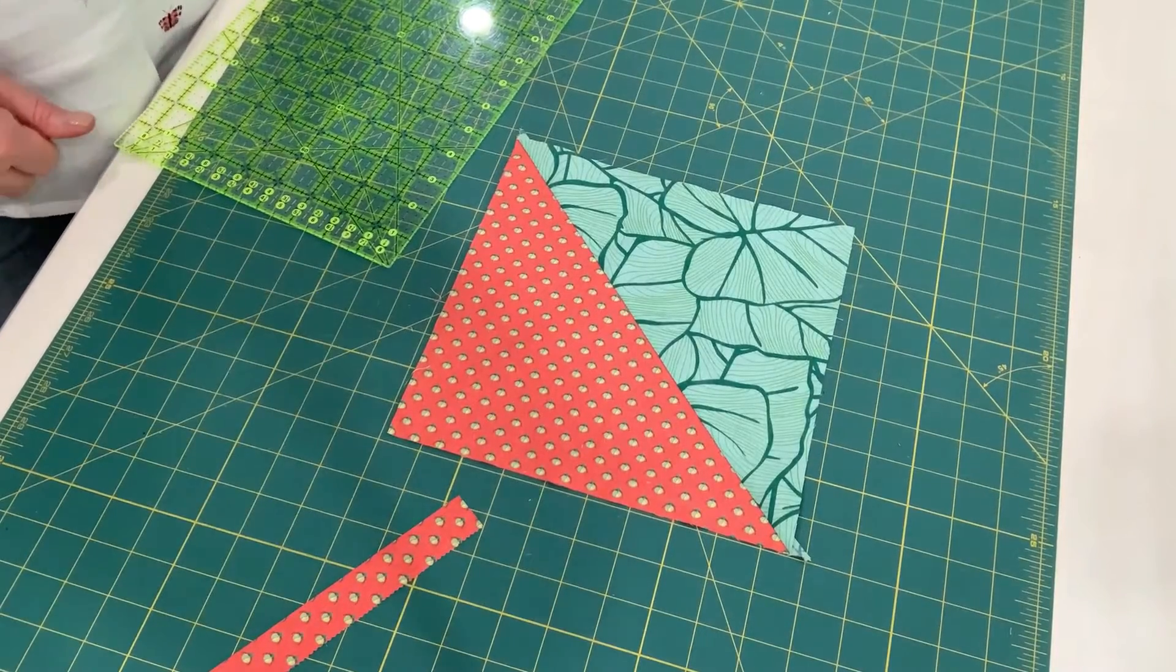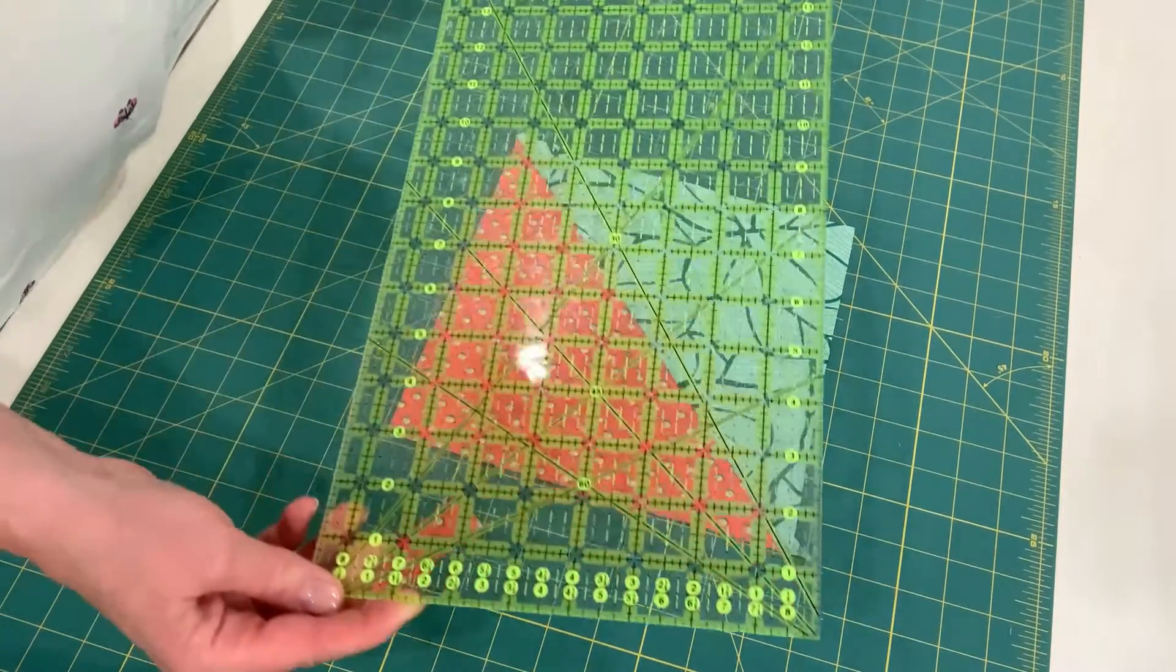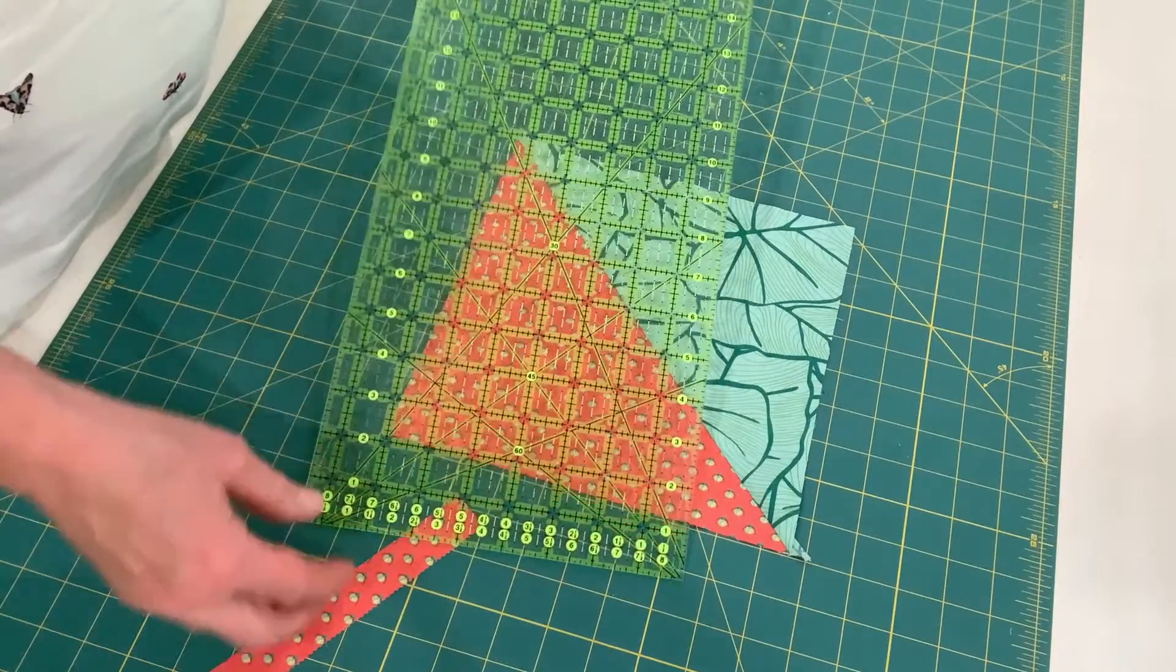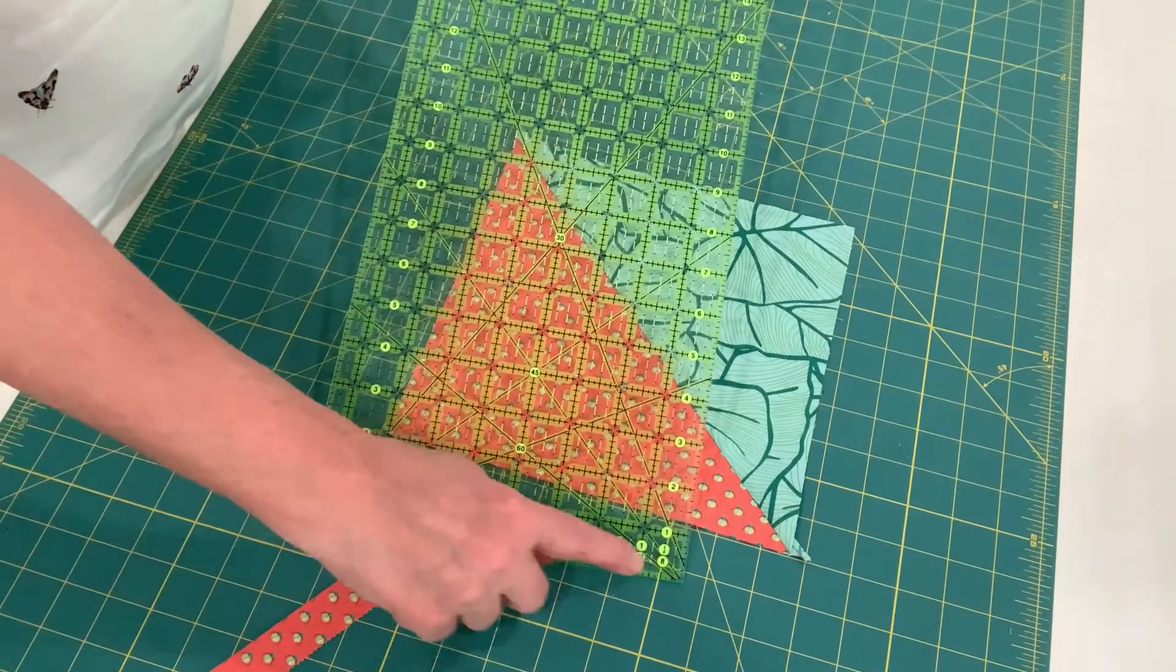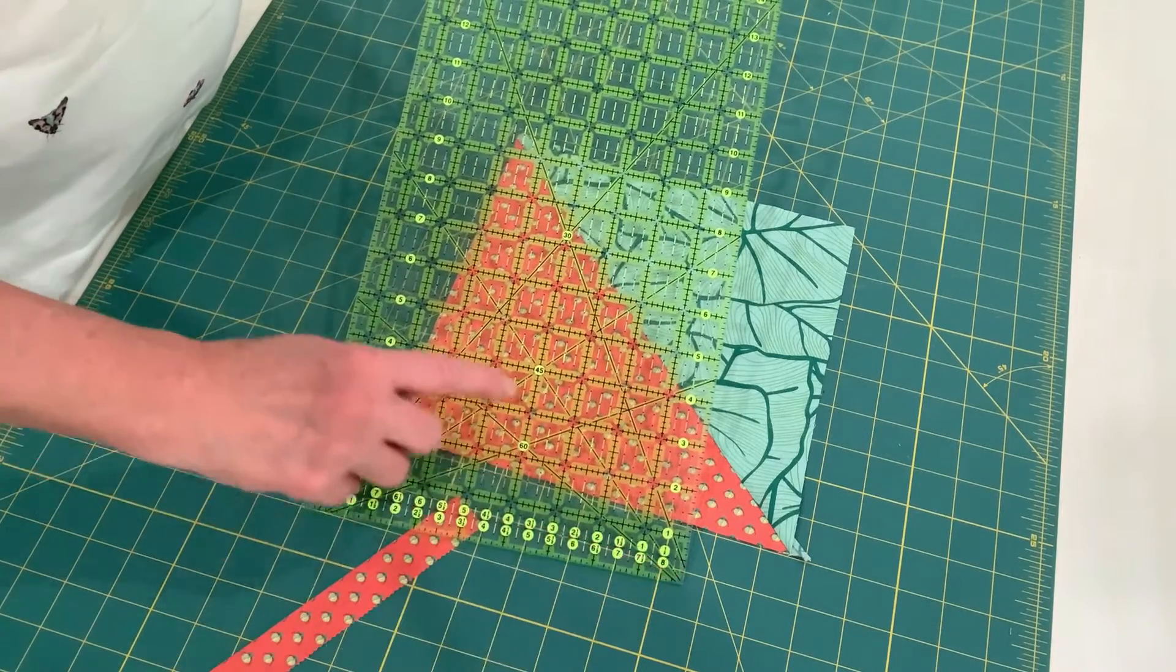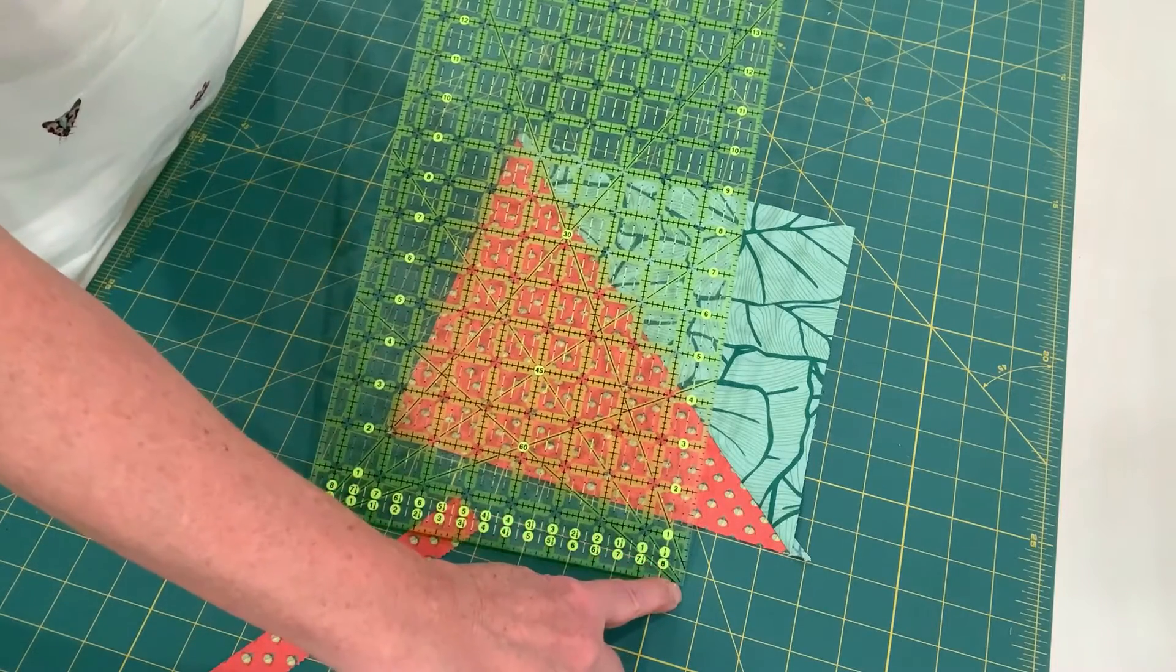Also trim triangle squares with other rulers. And in this case, I've got an 8 1⁄2 by 24 inch ruler. And like all long 24 inch rulers, there are angles marked on them. So this particular angle that we want to use is the 45 degree angle, which goes from the 8 1⁄2 to the bottom corner.